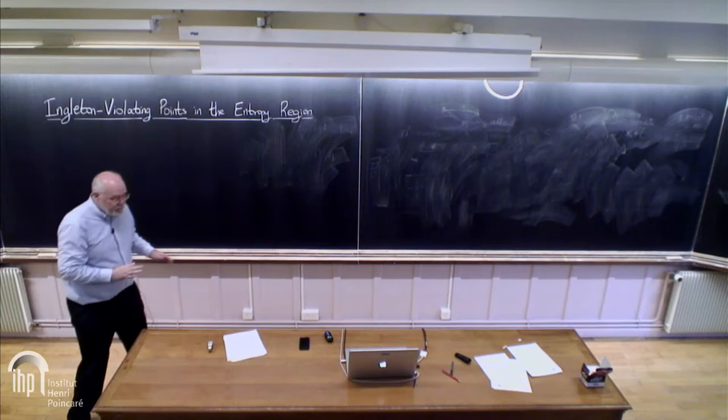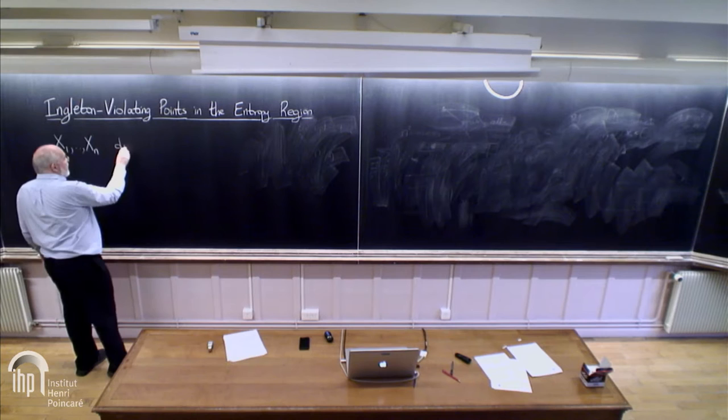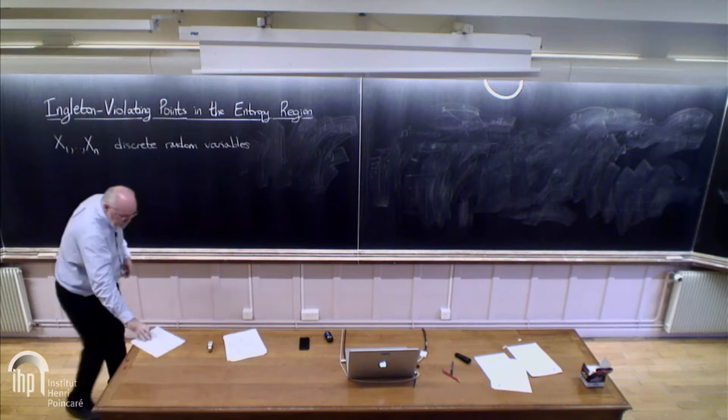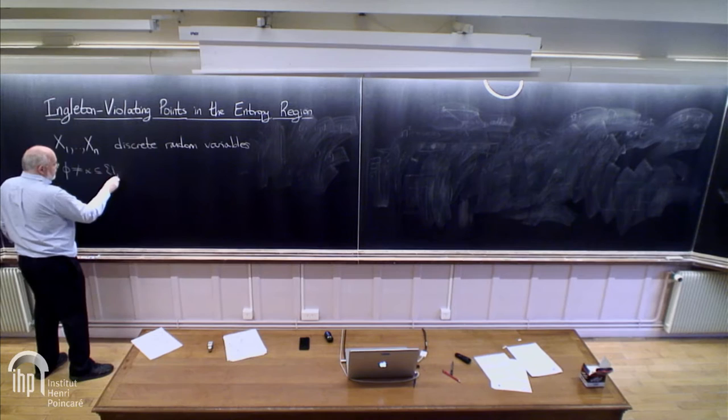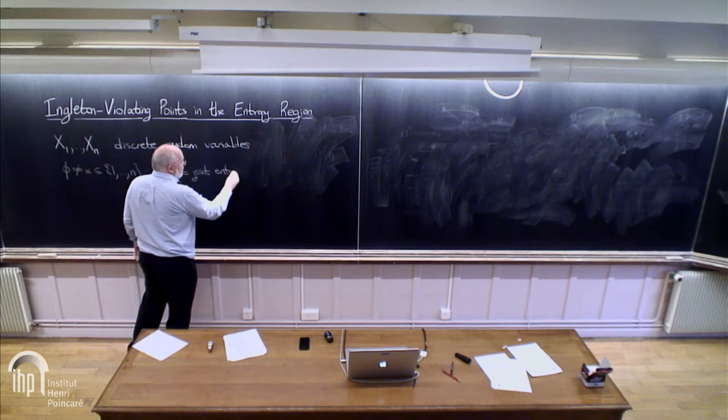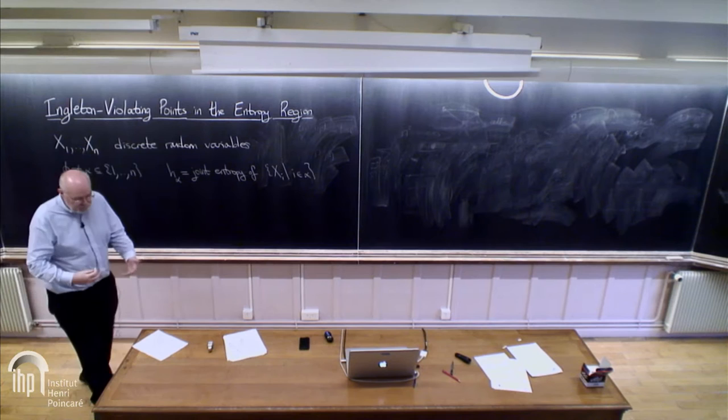I'm going to begin by recapping what Laszlo and Ferro said about what the entropy region is. Suppose we have N discrete random variables. For every non-empty subset of 1 through N, we can talk about the joint entropy of the Xi for i in alpha. You just take the marginals and off you go.